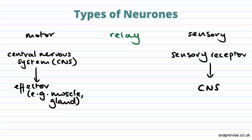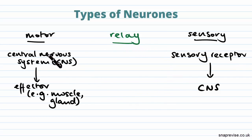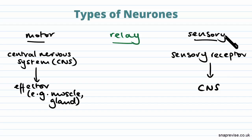The three main types of neurons you'll find in the nervous system are motor neurons, sensory neurons and relay neurons. They all have the same basic function of carrying an electrical impulse from one part of the body to another, but they do so for different parts of the body.